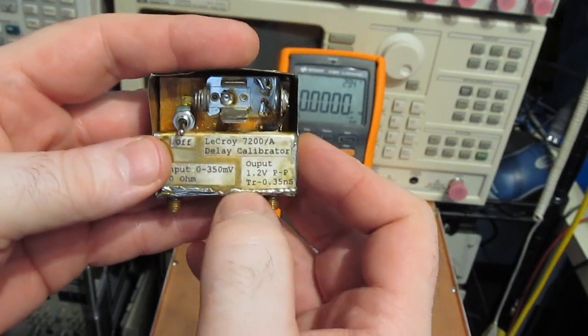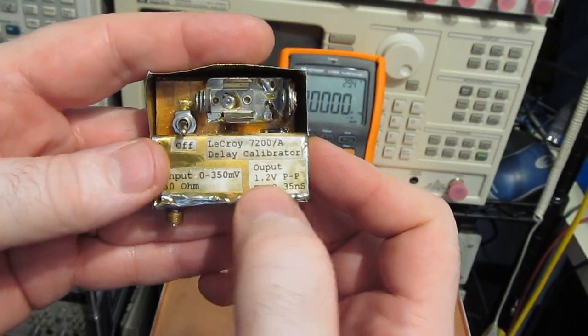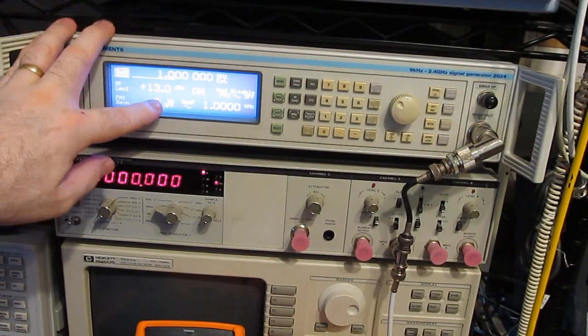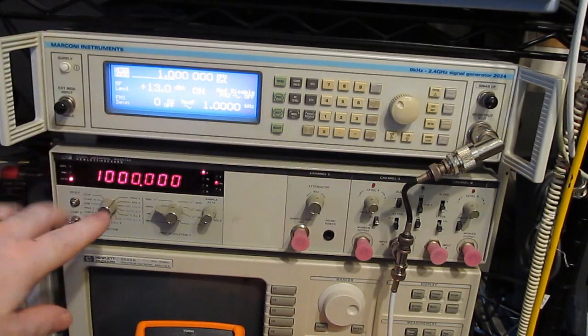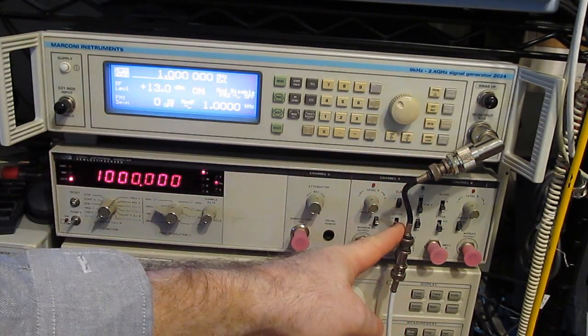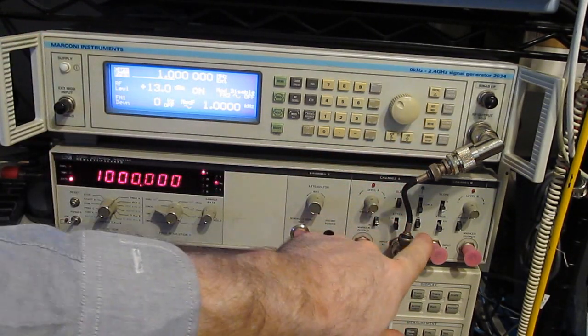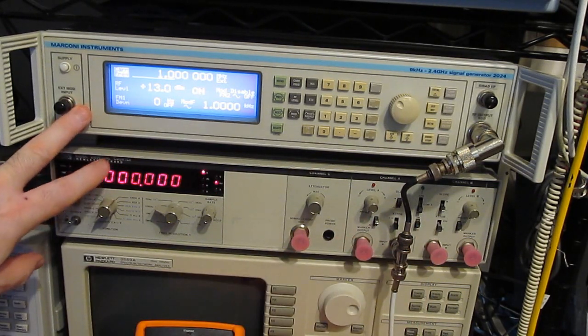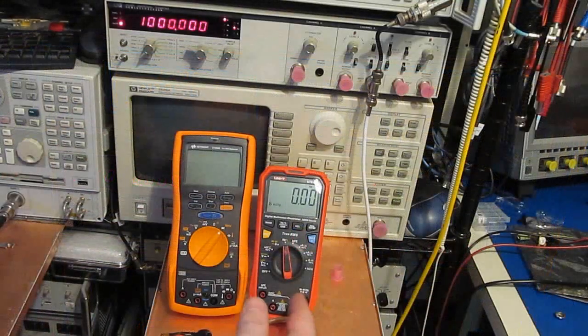On the top we have our RF generator. You can see this is currently set for one megahertz. This is connected in series with our counter. The counter is set for a one megaohm input. Both of these instruments are tied to my GPS receiver.